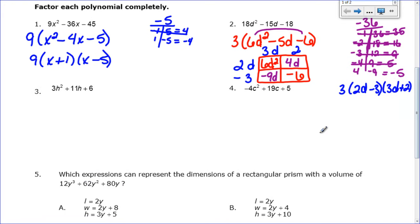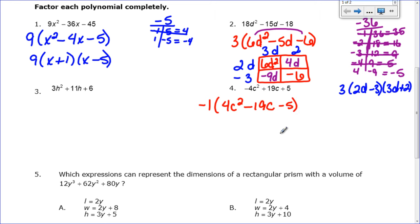Let's look at number 4: negative 4c squared plus 19c plus 5. The numbers 4, 19, and 5 don't share a greatest common factor since 19 and 5 are prime. However, because the leading coefficient is negative, I need to factor out a negative 1 first, which changes all the signs. This becomes negative 1 times (4c squared minus 19c minus 5). Taking out the negative first makes this much simpler to factor.